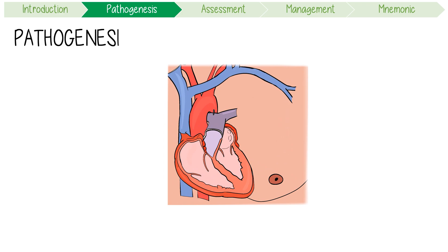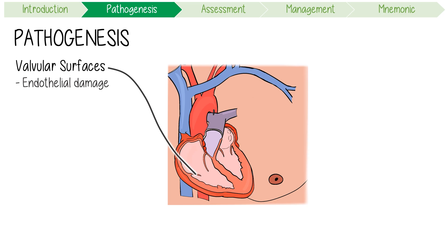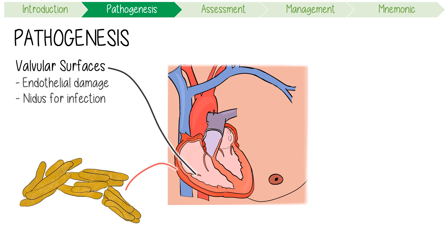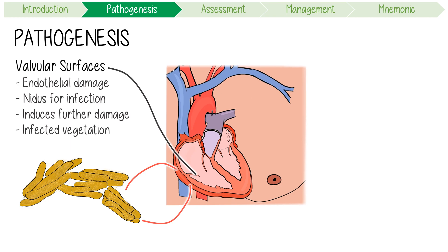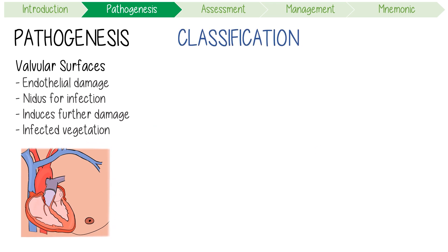In terms of its pathogenesis, infective endocarditis develops on valvular structures which have sustained endothelial damage. This serves as a great nidus for infection; however, colonization also induces further damage and thrombus formation. This is why it can eventually mature into a growing infected vegetation.